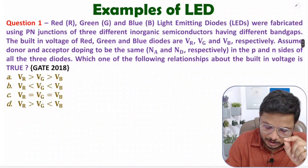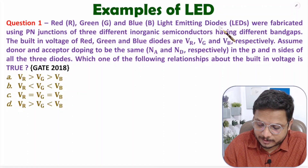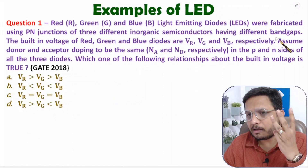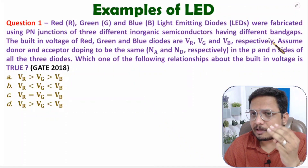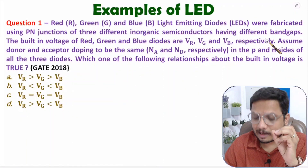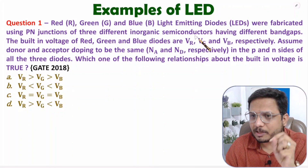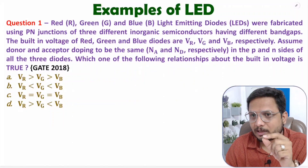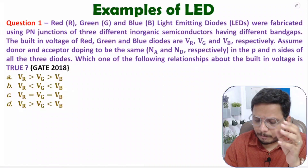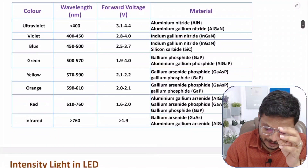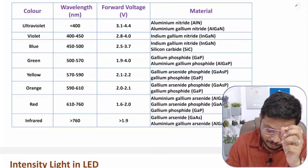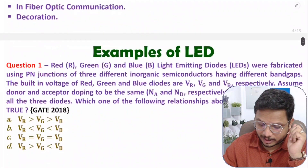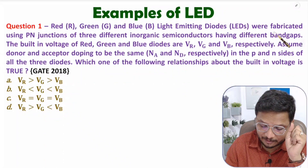In the first question: red, green, and blue light emitting diodes were fabricated using PN junctions of three different inorganic semiconductors having different band gaps. Here, inorganic means compound semiconductor materials used for LED fabrication — not silicon or germanium. For example, for blue color you can use indium gallium nitride, and for green color you can use gallium phosphide. These are compound semiconductors.